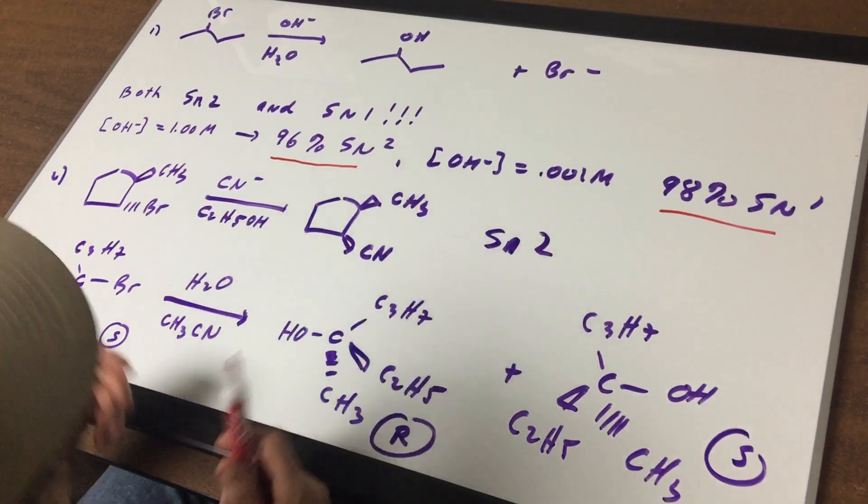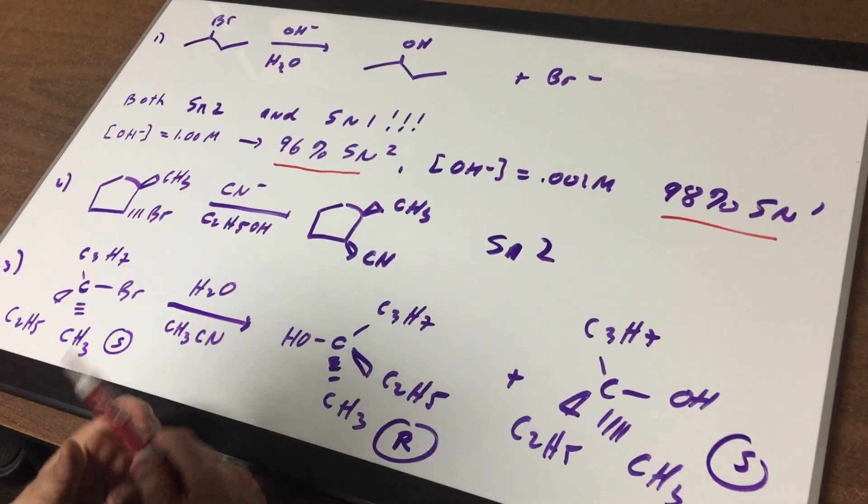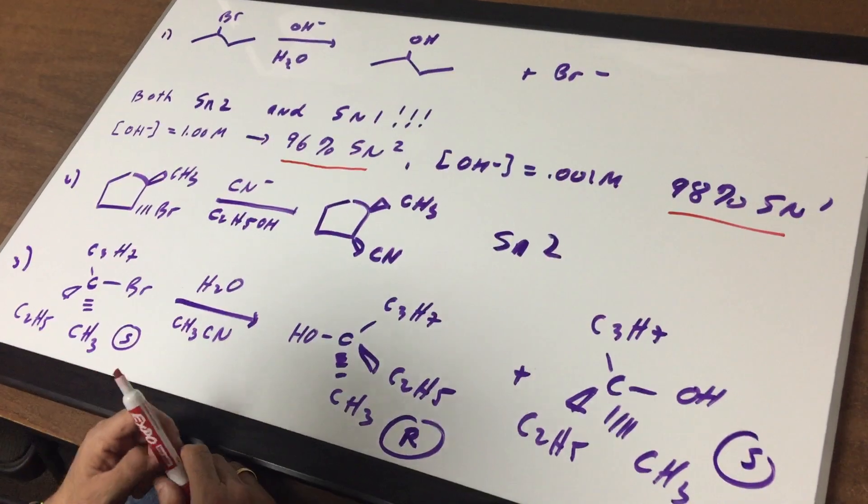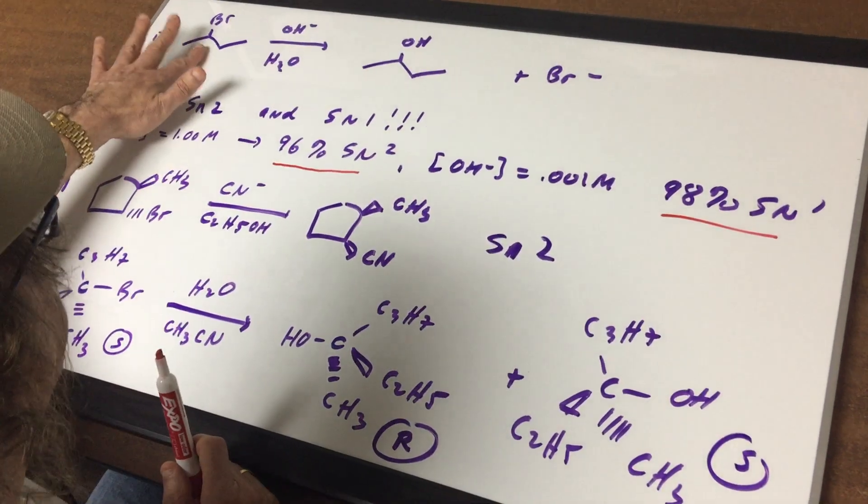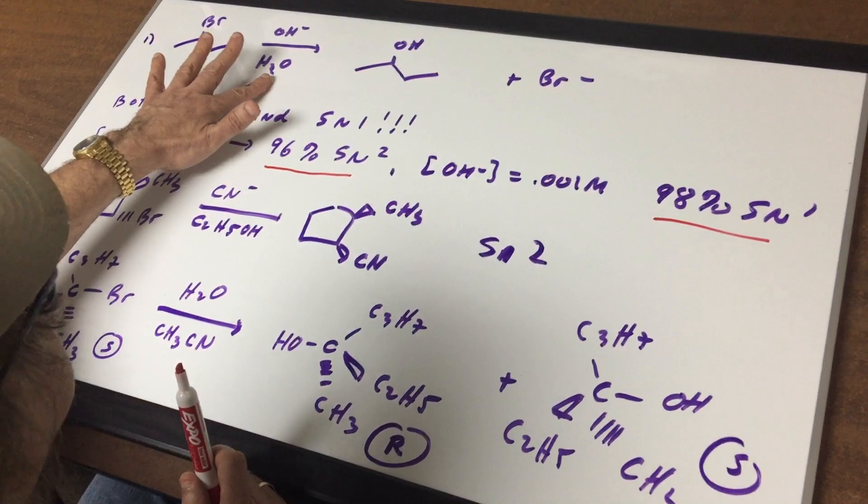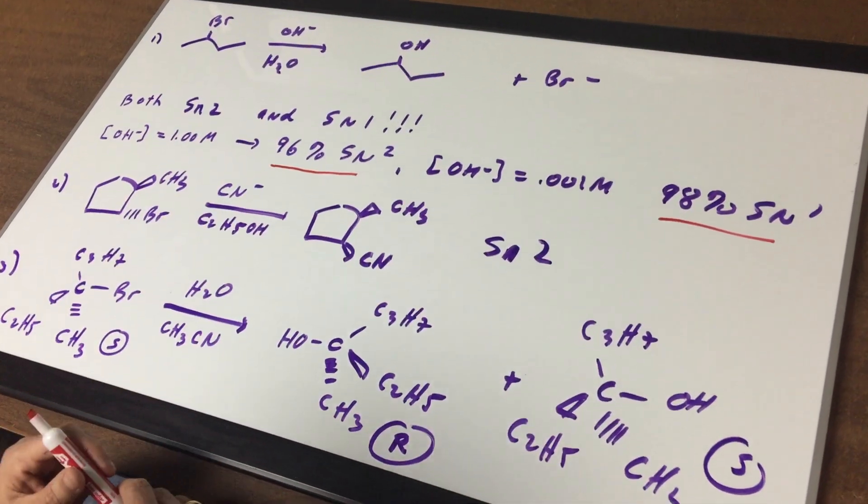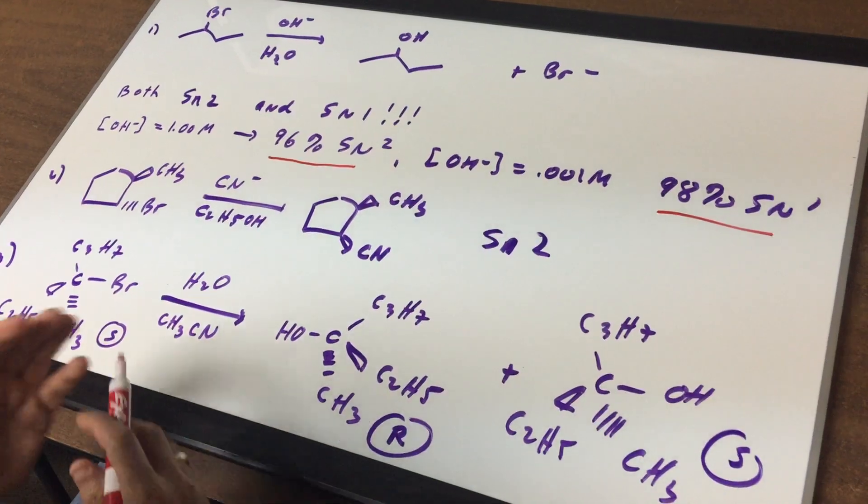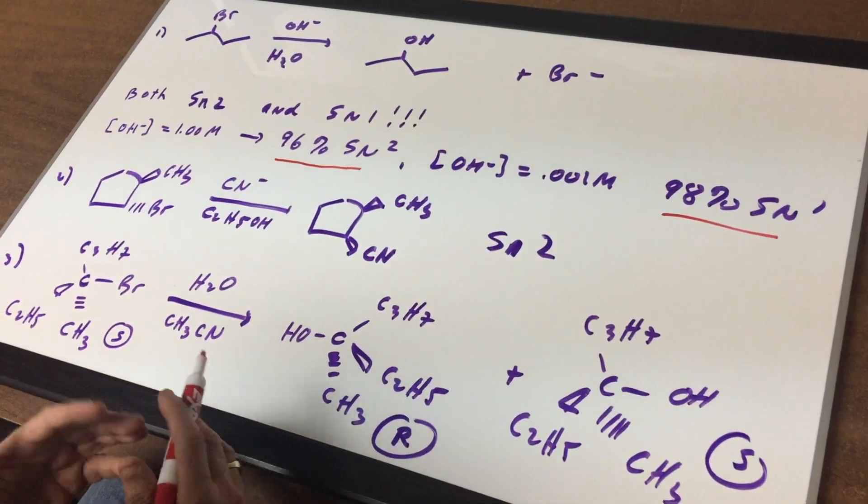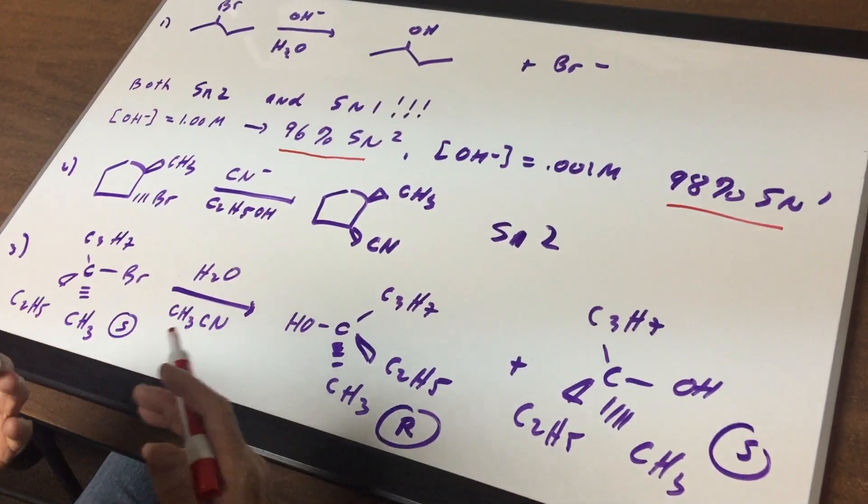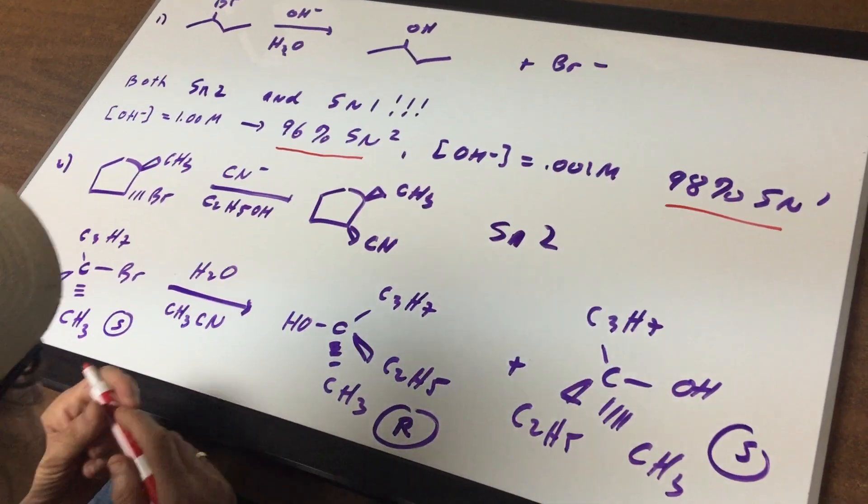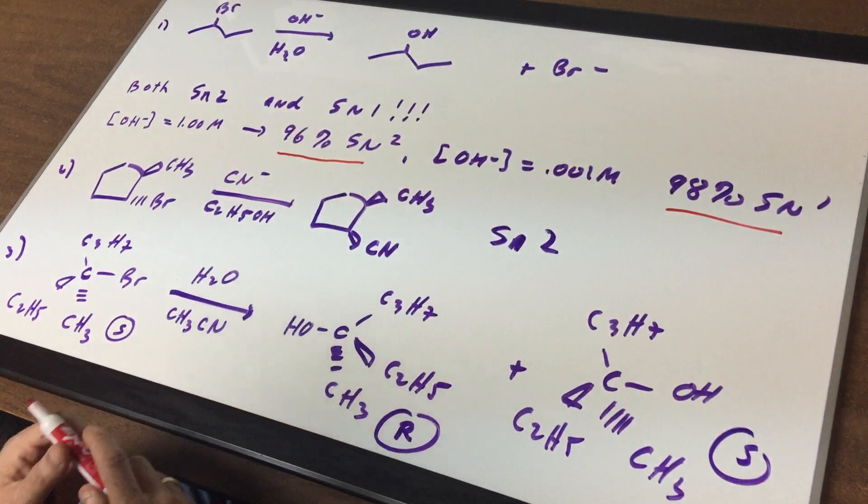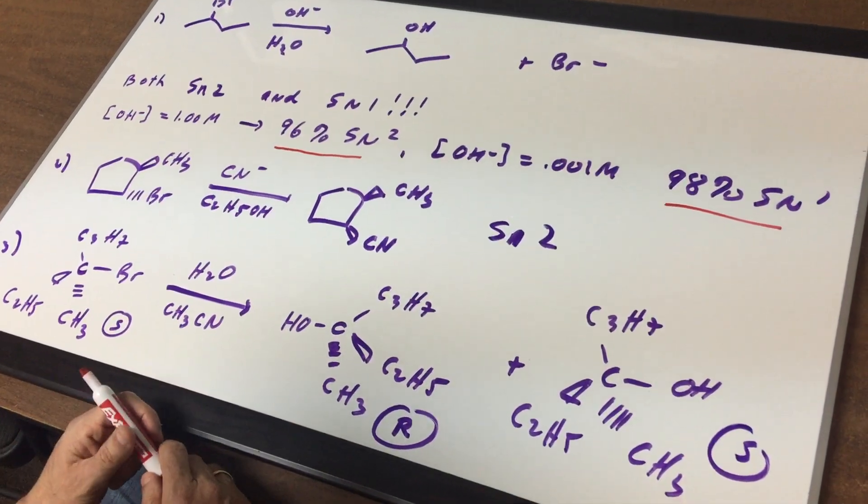So whenever you have a secondary halide, you got to be a little careful. There's always some competition between SN2 and SN1. But a good general rule, if you see a secondary halide and the solvent is polar protic, you're going to think SN1. If it's a strong nucleophile, then it can sort of go either way. If you had a cyanide or a sulfur, those guys love to do SN2. But if you have water on a secondary halide, often we go SN1.